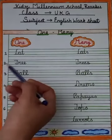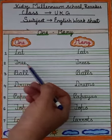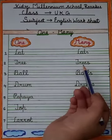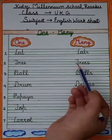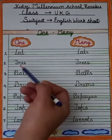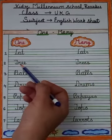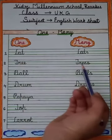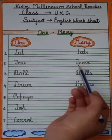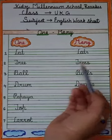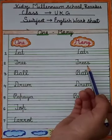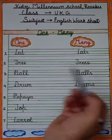Number two is t-r-double-e, tree. And many of tree is t-r-double-e-s, trees. A tree — ek se zyada trees.